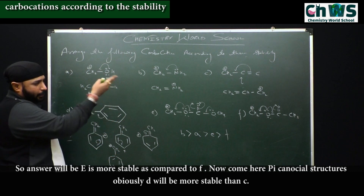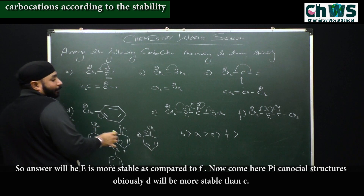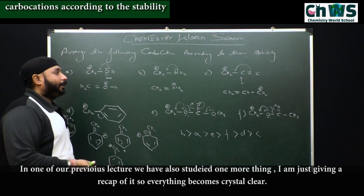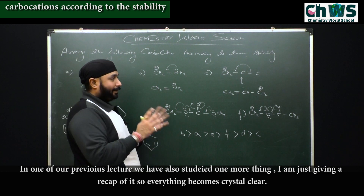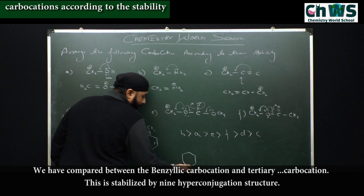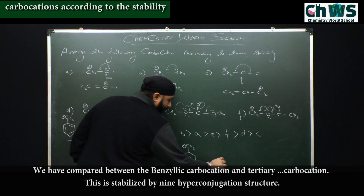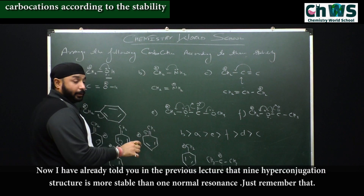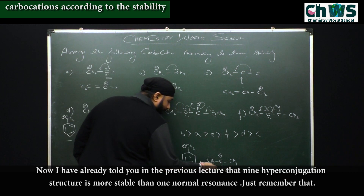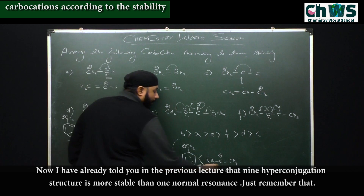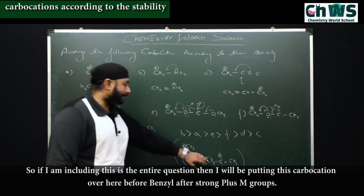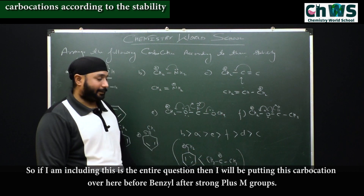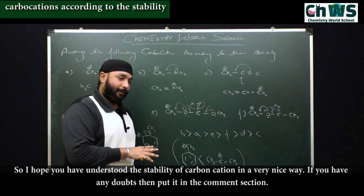With five canonical structures for benzyl versus two for allyl, D is more stable than C. Also recalling from a previous lecture: a tertiary carbocation stabilized by nine hyperconjugation structures is much more stabilizing than one normal resonance. Including this in the full ranking, the tertiary carbocation (with nine hyperconjugation structures) is placed after the strong +M groups but before the benzyl carbocation. So the final stability order is: B > A > E > F > D > C, with the tertiary carbocation appropriately placed.